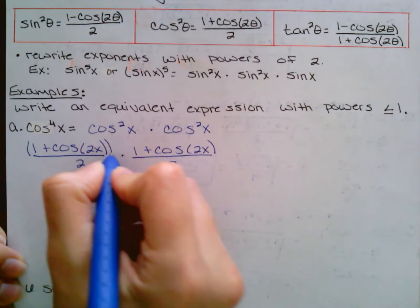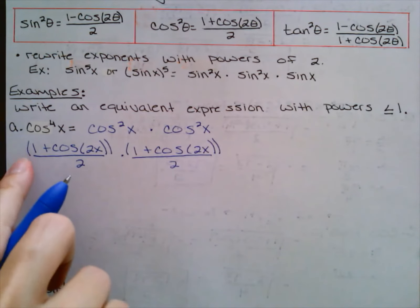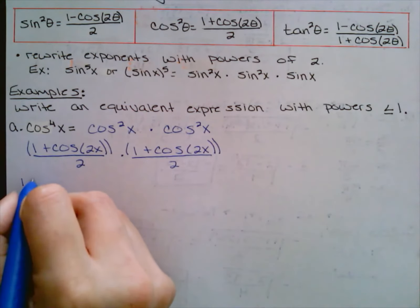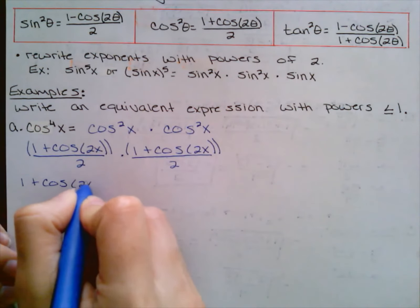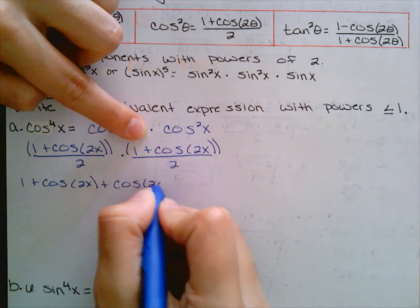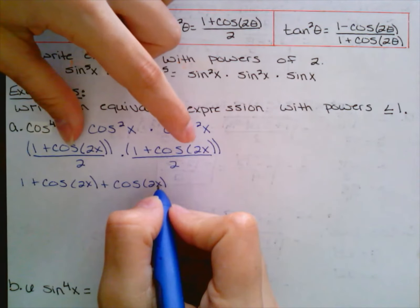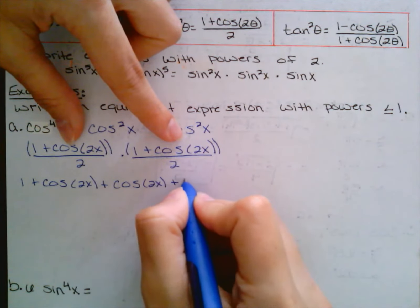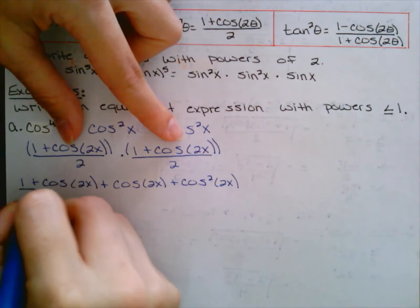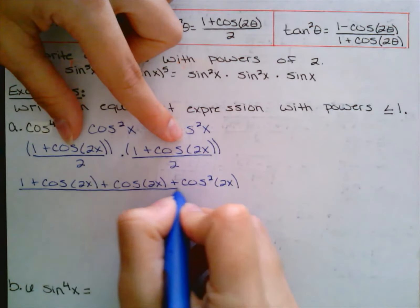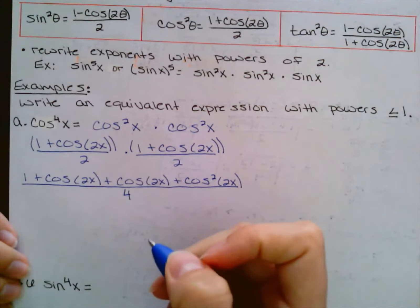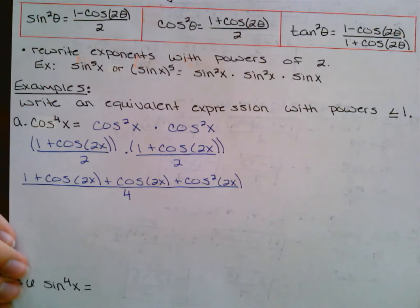Now I'm going to multiply straight across. Since I have two terms in my numerator, I'm going to have to FOIL. So one times one is one, one times cosine of two x, then cosine of two x times one, and cosine two x times cosine two x gives me cosine squared of two x.